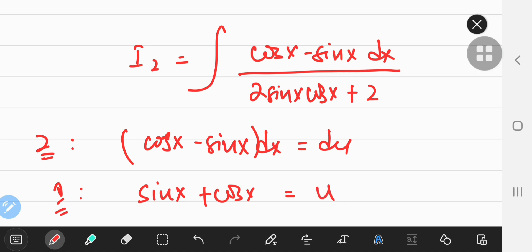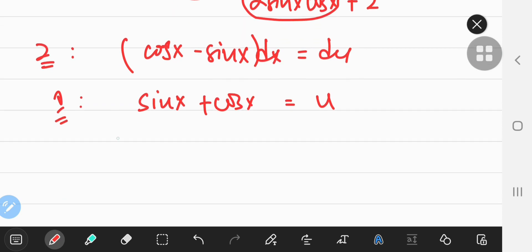So here I have my u sub, and once again, to deal with the cross term in the denominator, I have to square the sum of sine x and cos x. So sine x plus cos x squared equals the sum of the squares is 1, right? And you have plus twice the cross term.